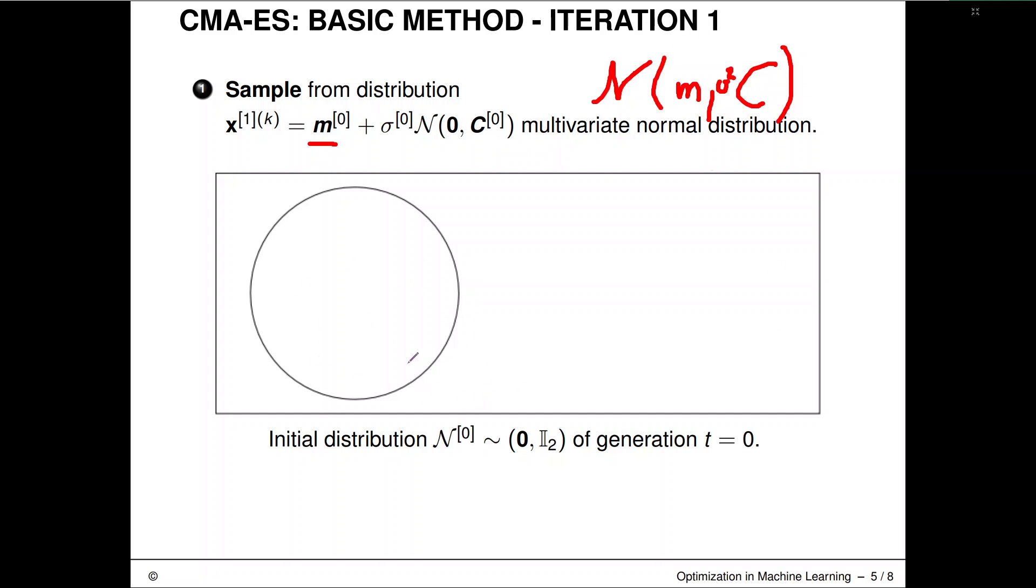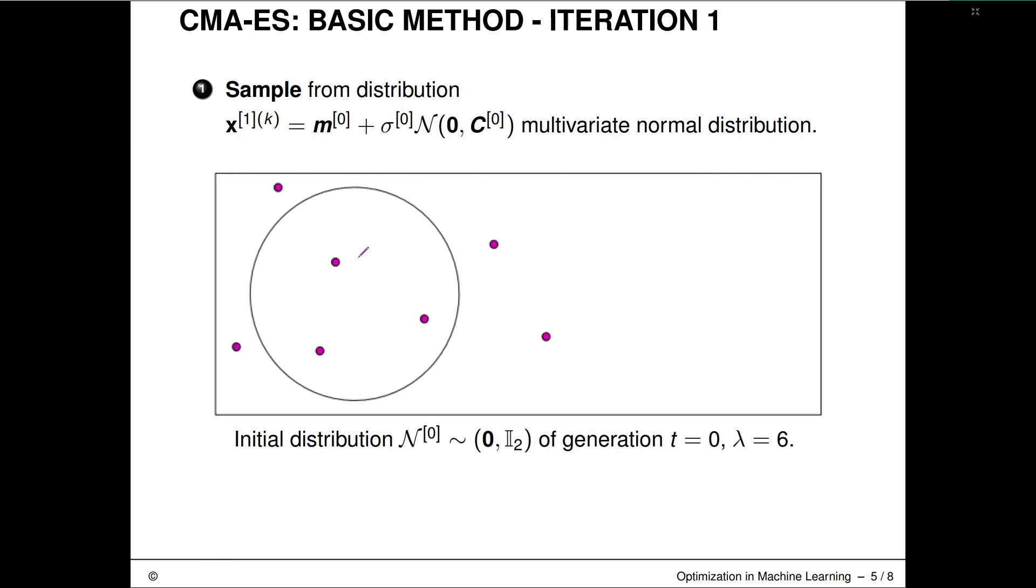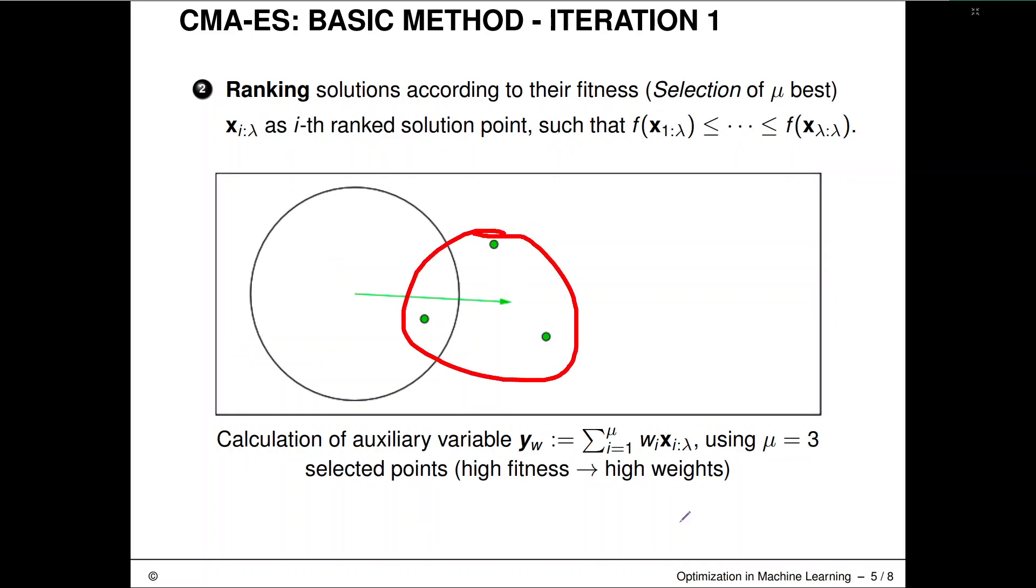So in the beginning, we have our initial distribution here. Maybe even our mean vector is zero, and this guy here is zero mean anyway. So we pick some initial setting of sigma and we sample from this. So we sampled six offsprings, and we now reduce them to the best half, okay, which would be these guys here.